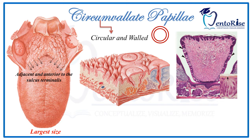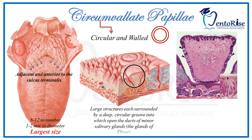They are approximately 8 to 12 in number and 1 to 2 mm in diameter. These are large structures surrounded by a deep circular groove which opens into the ducts of minor salivary glands — the glands of von Ebner.